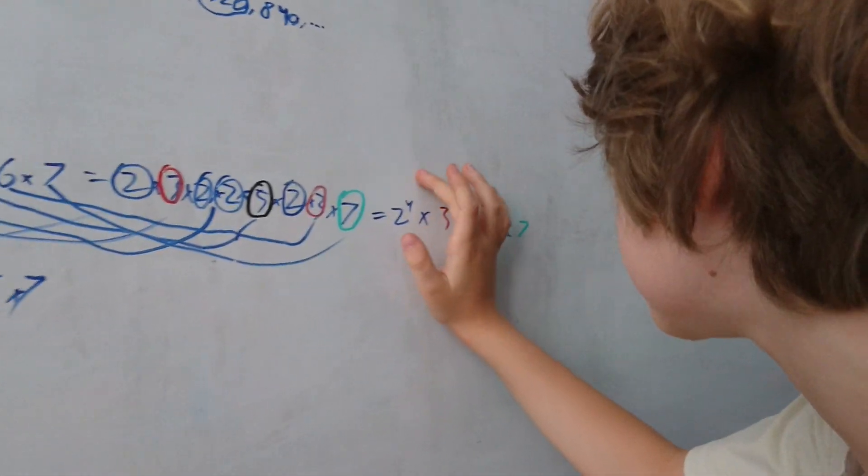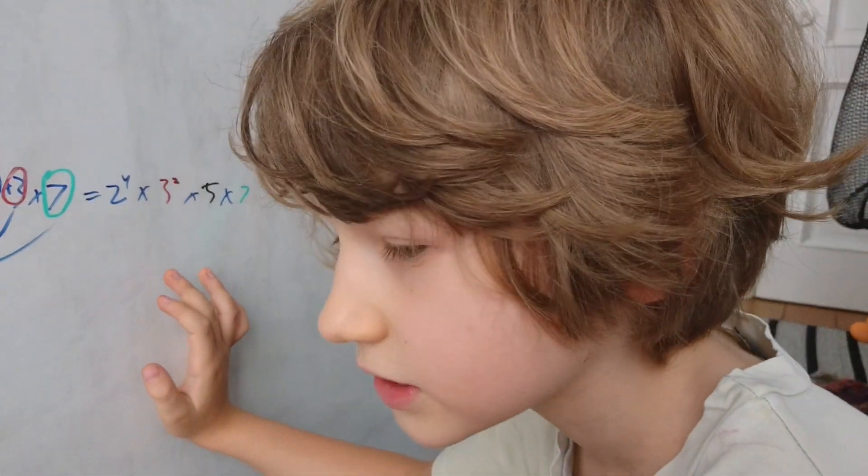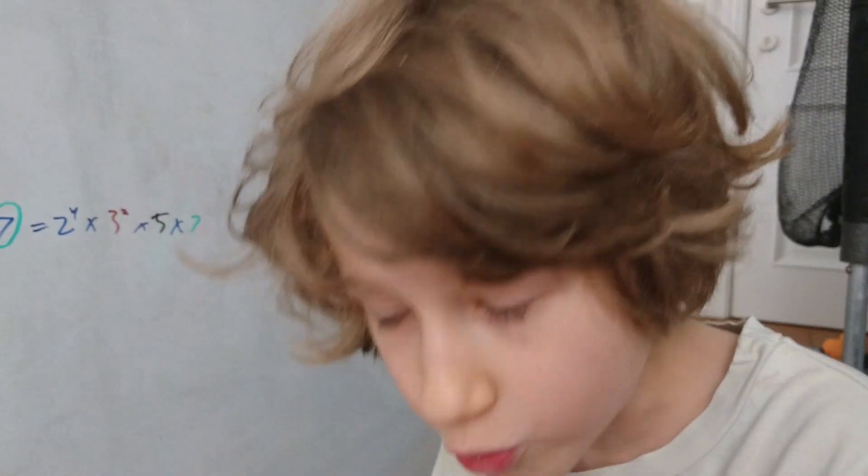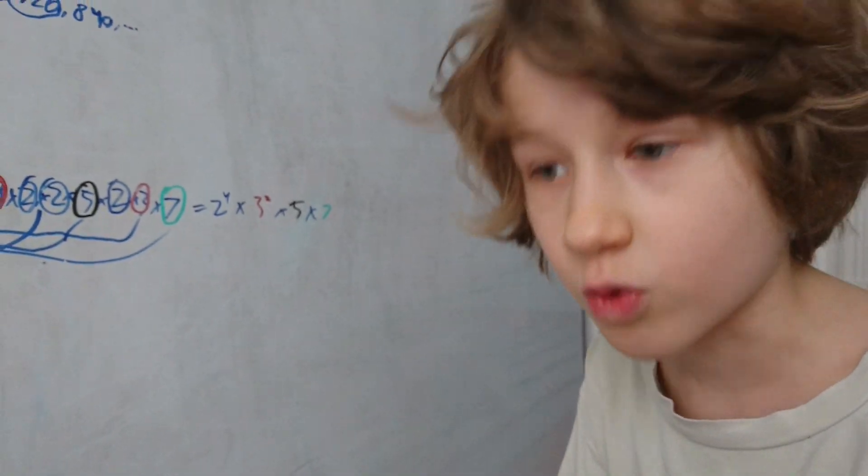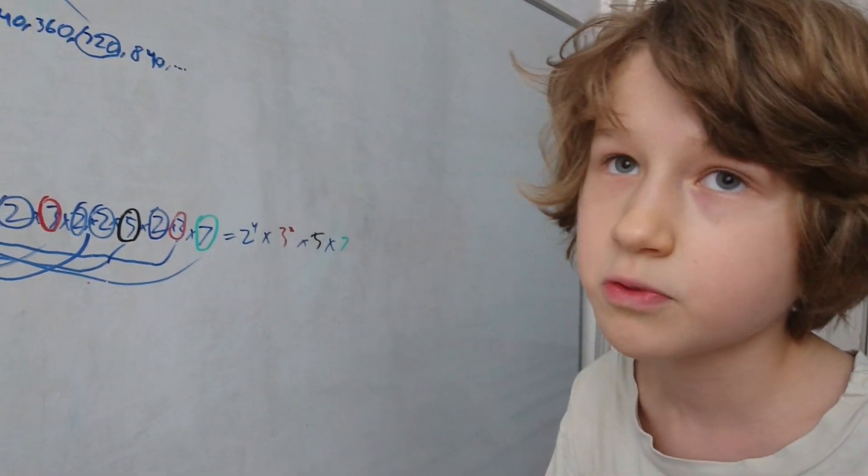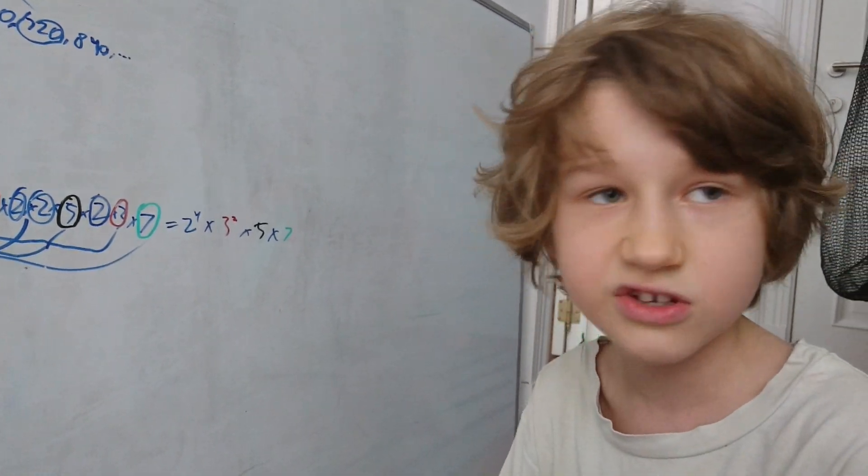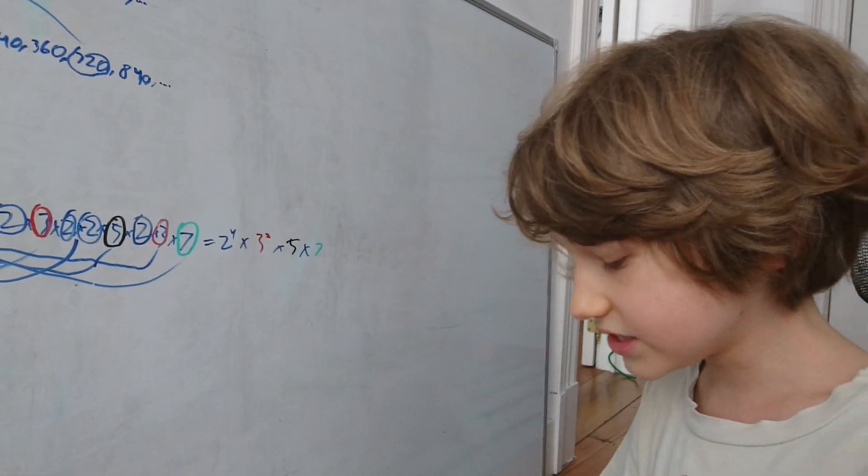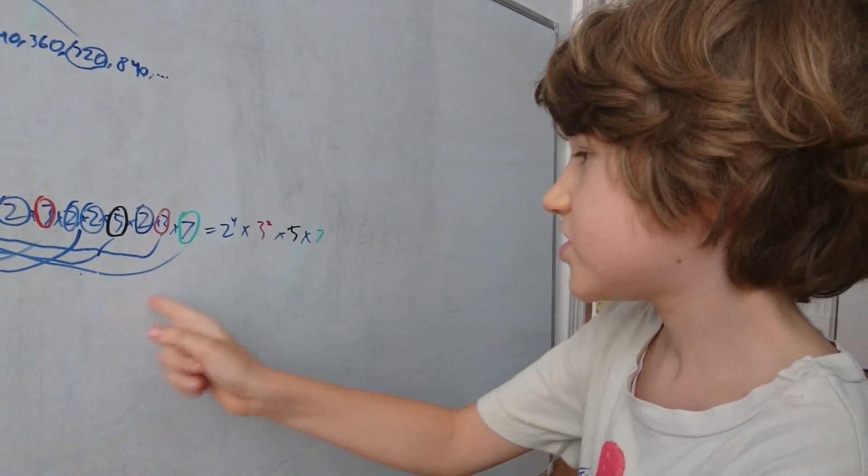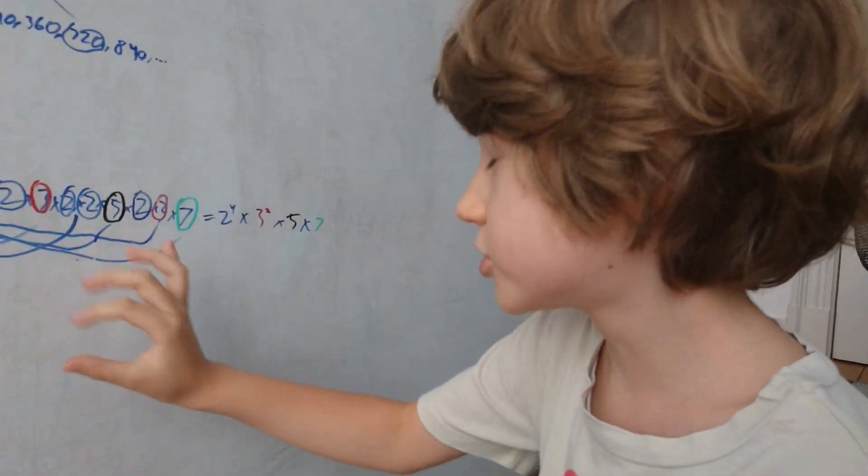The second rule is that those powers have to be decreasing. Well, that's pretty obvious, because multiples of 2 are more numerous than multiples of 3, multiples of 3 are more numerous than multiples of 4, and so on. So I'm going to have to pick up more 2s than 3s, more 3s than 5s, more 5s than 7s.